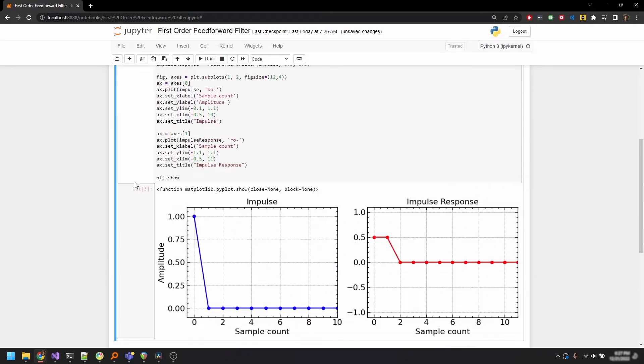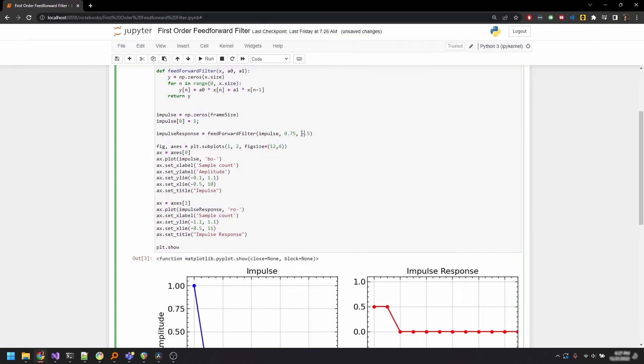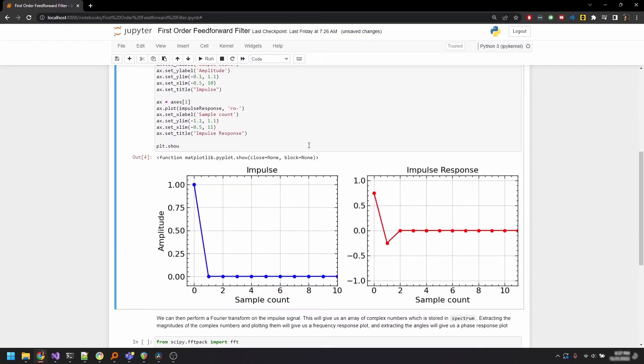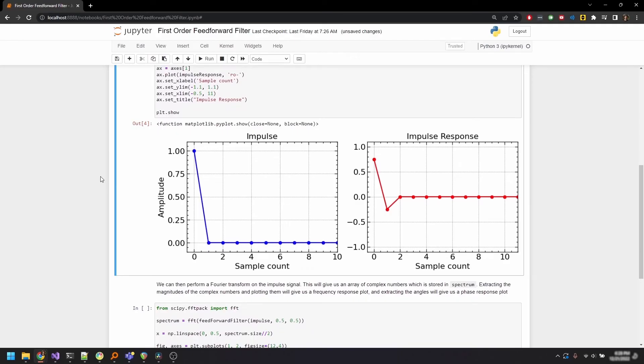If you change a0 to be 0.75 and a1 to be negative 0.25, then we can see that the non-zero values of the impulse response are identical to the coefficients that we chose. So the impulse response is the time domain response of the filter. There isn't much we can infer from this graph, other than the fact that the signal has been slightly stretched out and smeared. The real interesting part is how the filter behaves with certain frequencies.